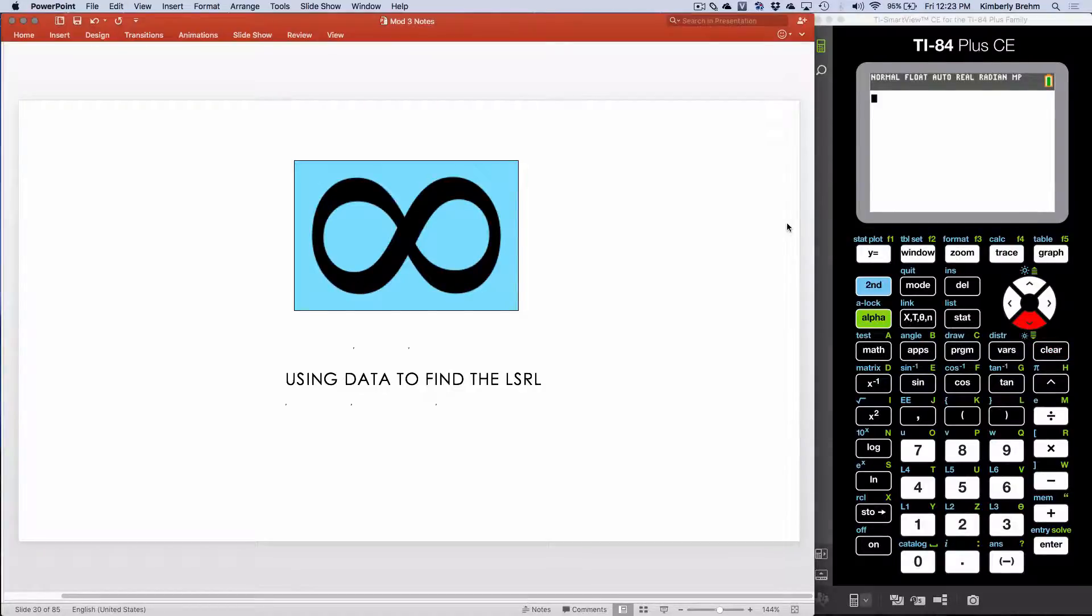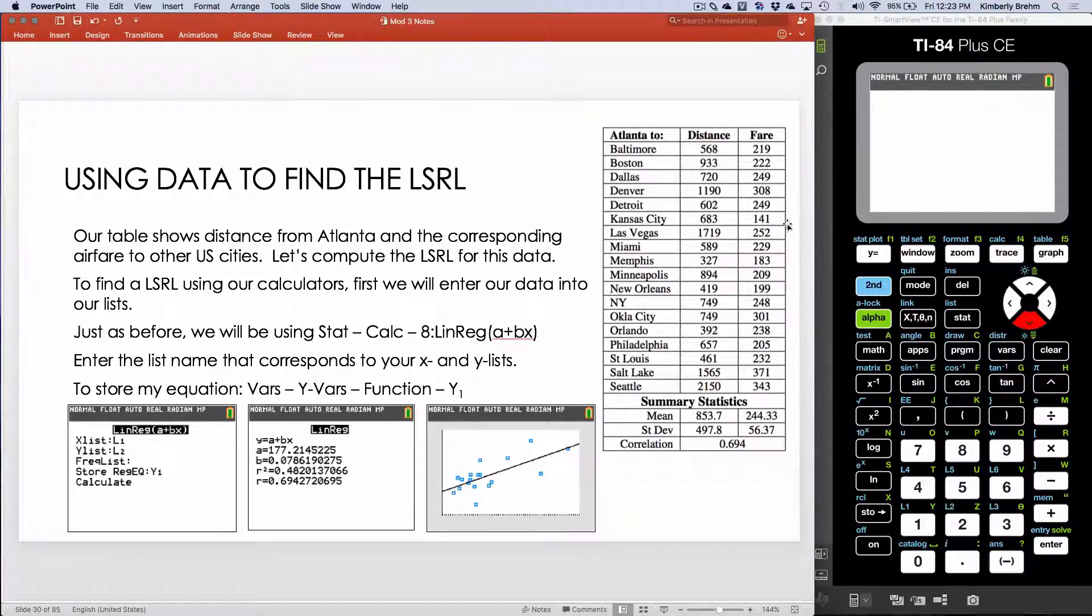What I'm going to do is enter my data into my calculator. These should be loaded into your course as L1 and L2 so that you don't have to type them out by hand. The data in my table is the distance to those different cities from Atlanta and the fare that we would expect to pay from Atlanta to those U.S. cities. I have all the data here and they have given me some summary statistics, which we'll talk about in our next lesson.